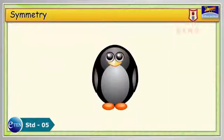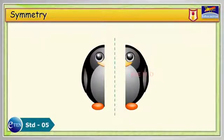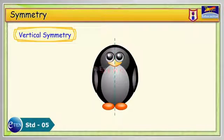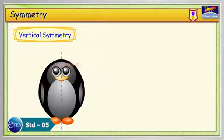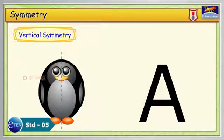Look at this penguin. This image has one line of symmetry, i.e. vertical symmetry. The letter A also has one line symmetry, i.e. vertical symmetry.